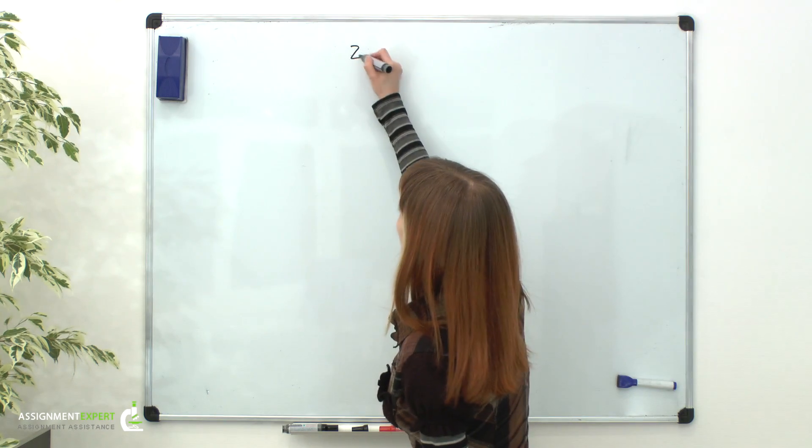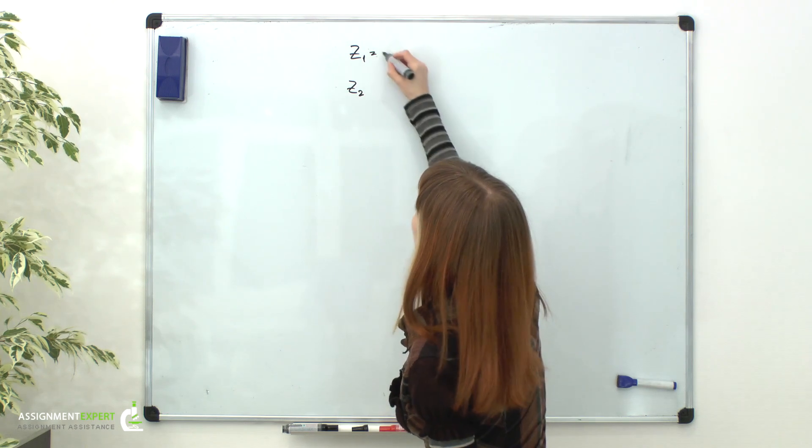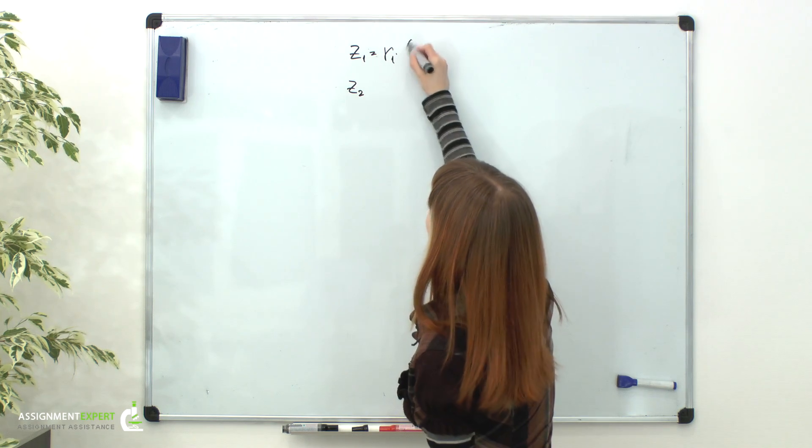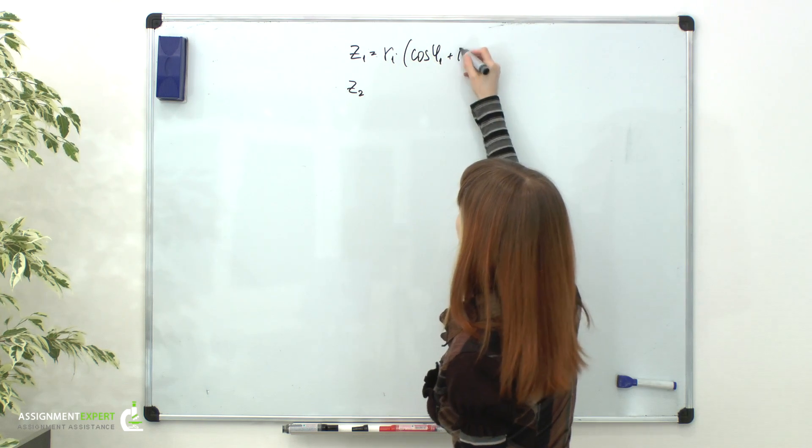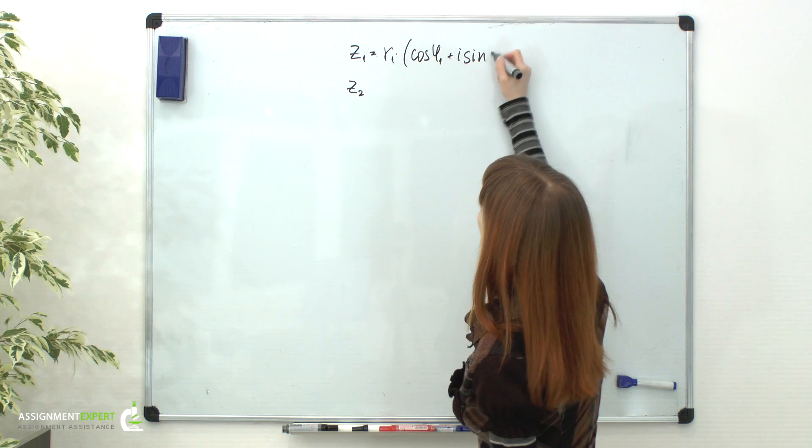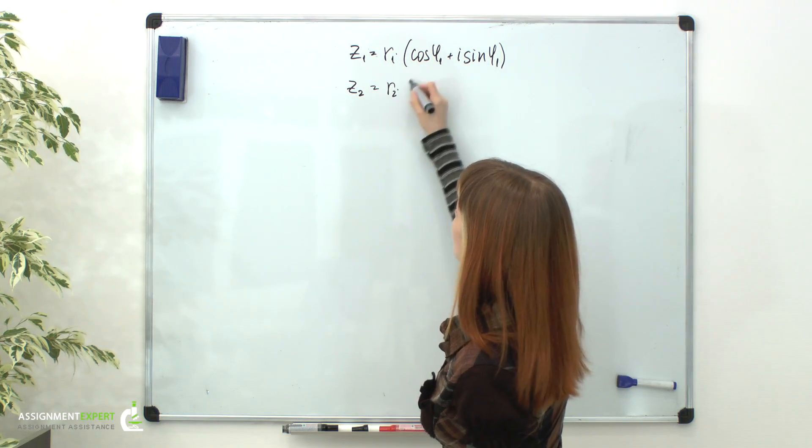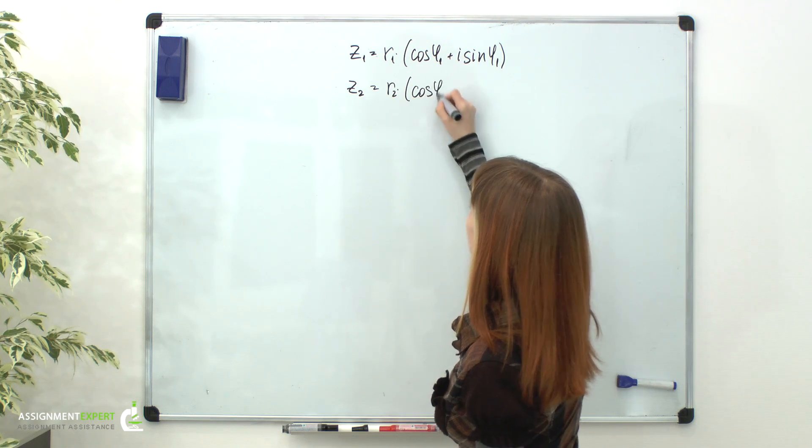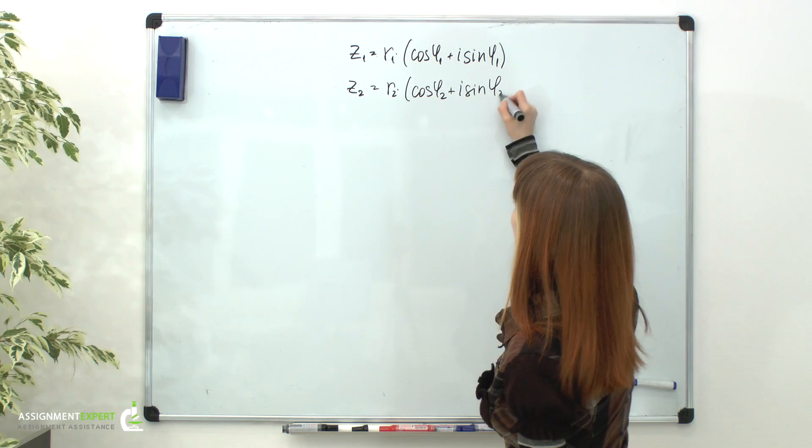So if we have two complex numbers, z1 and z2, given in trigonometric form and equal to the following: r1 times cosine of phi1 plus i sine of phi1, r2 times cosine of phi2 plus i sine of phi2.